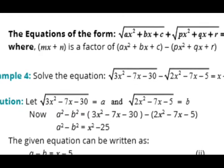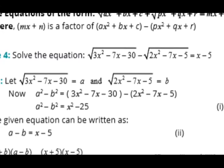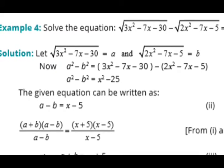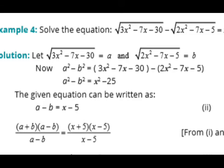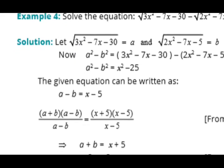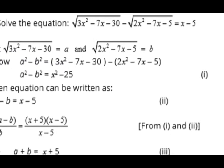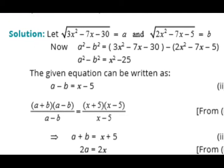Now we have another form with two radical signs where the expressions underneath are quadratic. All values are different. We let one radical expression equal to a and the other equal to b. We square these two values and subtract: right-hand side minus right-hand side, and left-hand side minus left-hand side. When we substitute a and b, we get a − b = x − 5, which is equation number 2.